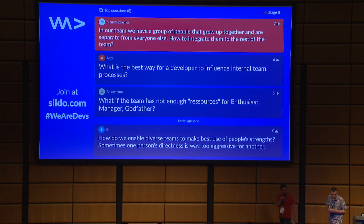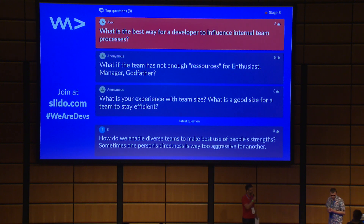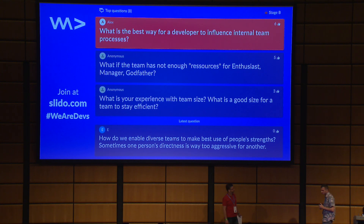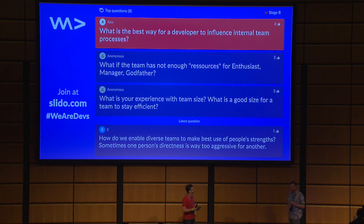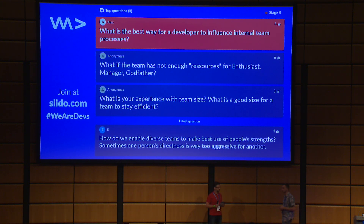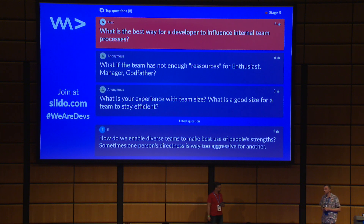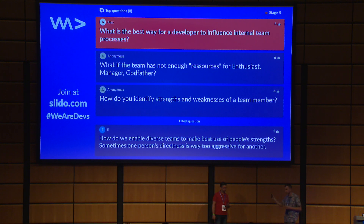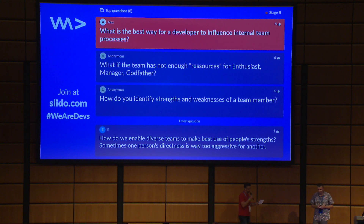[Moderator]: For a developer, what's the best way to influence team processes and team behavior? [Speaker]: It's hard to change internal team processes without approval. A developer needs a godfather for this. If he can be the enthusiast who loves the process and wants to implement it, he still needs someone to take care of and support him. So finding someone who helps with that leads to the next question.